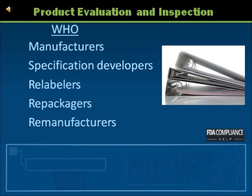A record form to be used during the process for recording the data should be designed and made a part of the DMR. Decisions on what to test and how to test should be made during the product and process development phase. If these decisions were not made at the time, the firm should establish them retrospectively.